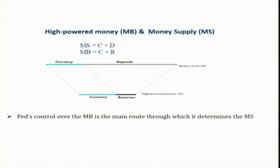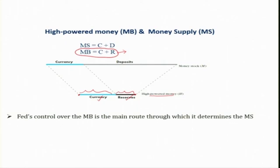Looking at this figure, at any given period of time, one part is currency in circulation and the remaining part is reserves — including required reserves and excess reserves — and together we call this the high-powered money or the monetary base. So the monetary base means currency in circulation plus reserves, which includes required reserves and excess reserves.